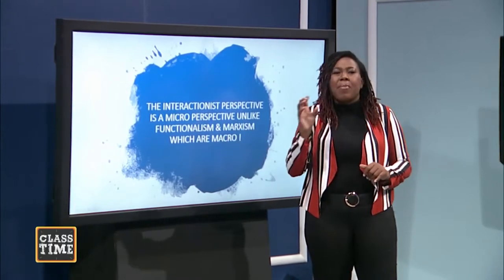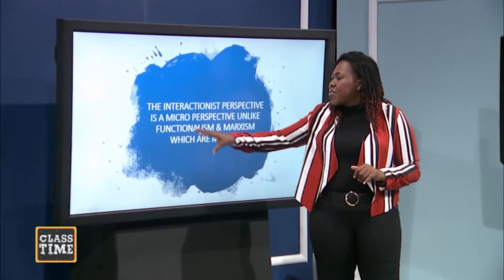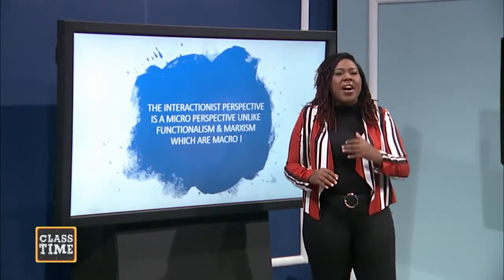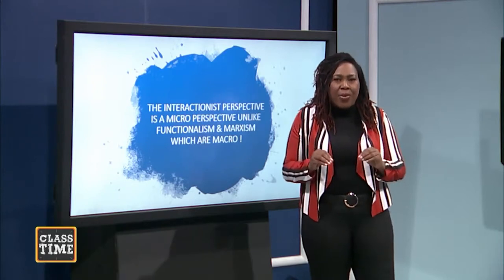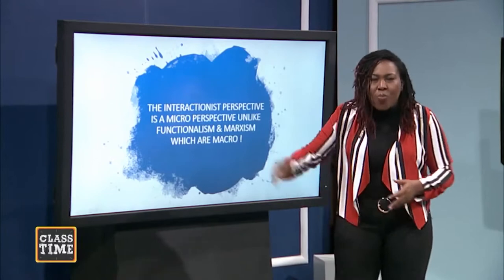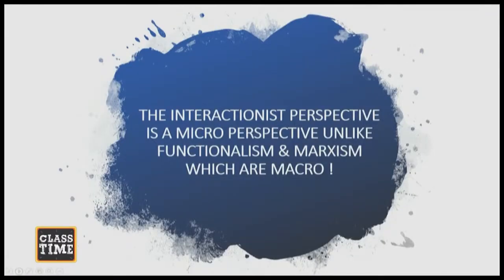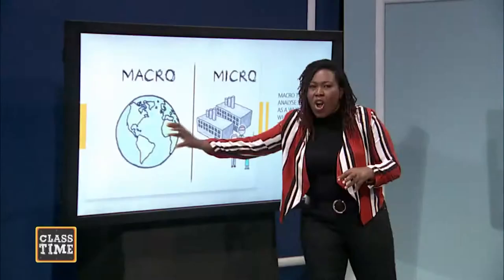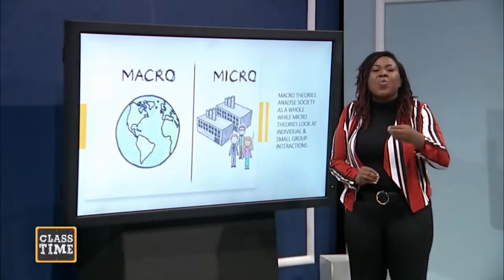The interactionist perspective is a micro-perspective, whereas the functionalist and the Marxist perspectives are macro. What does that mean? The micro versus the macro. Macro-sociologists, in general, look at society on the whole. When we looked at the functionalist and the Marxist, the functionalist would speak to us about how the institutions impact the individuals in society — their analysis is a holistic analysis. Whereas the micro look at individual and small group interactions.